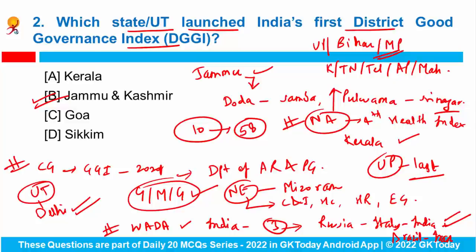Recently the government has released the UTIRAT ranking of institutions. You have to tell me who was at the top position — please write your answers in the comment section.